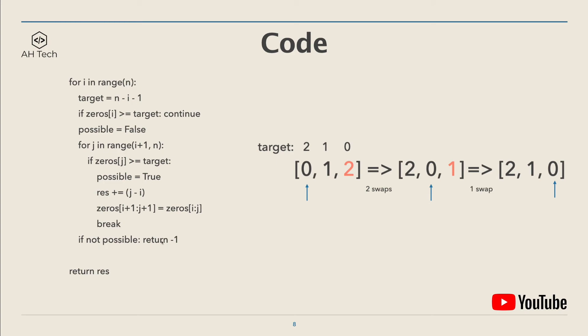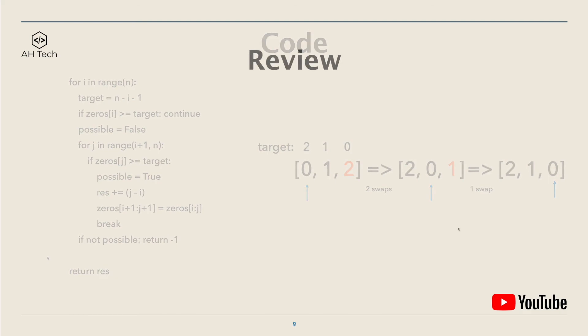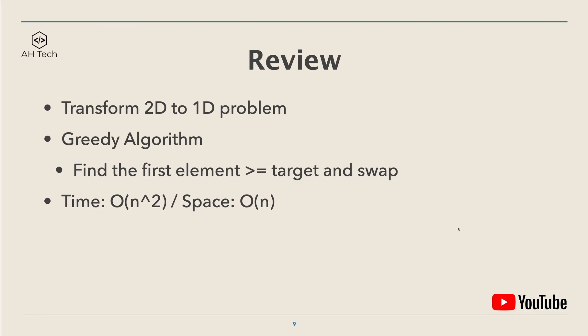Finally, check the possible flag. If possible equals to false, then we will just return negative 1 and finally return res. And finally, let's do a quick review. To be honest, I think this solution is pretty difficult to think of during a contest. But the key point is, first...